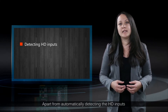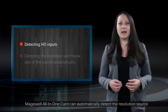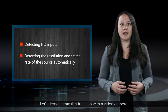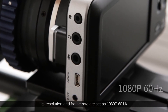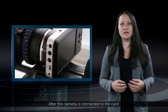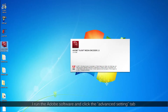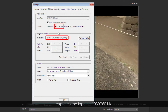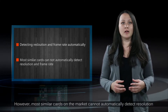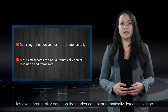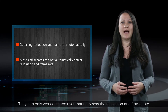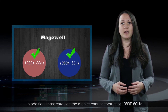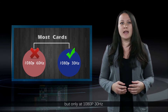Apart from automatically detecting the HD inputs, the Magewell all-in-one card can automatically detect the resolution and frame rate of the input source. Let's demonstrate this with a video camera whose resolution and frame rate are set at 1080p 60Hz. After the camera is connected to the card and I run Adobe software, the card automatically detects and captures the input at 1080p 60Hz. Most similar cards on the market cannot automatically detect resolution and frame rate, and can only capture at 1080p 30Hz rather than 1080p 60Hz.